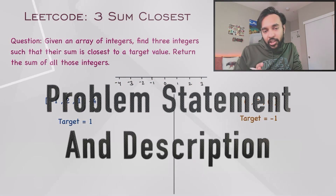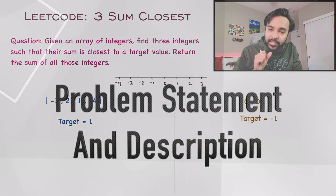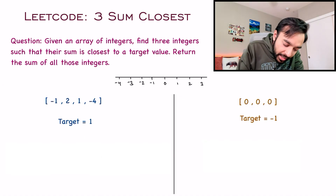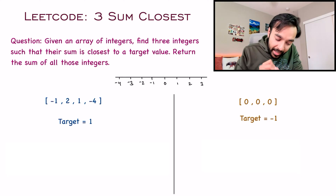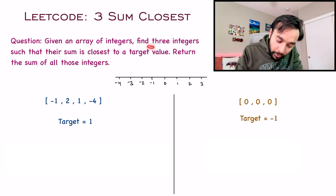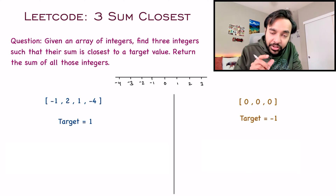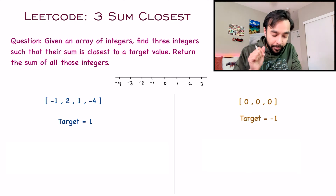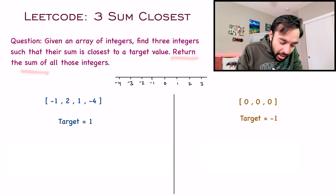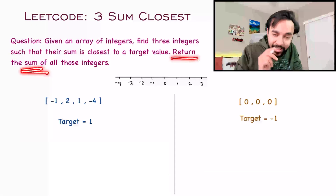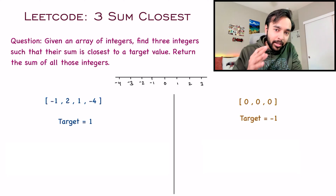Let's make sure that we are understanding the problem statement correctly. In this problem, you are given an array of integers and then you have to find three integers such that their sum is closest to a target value. And once you find these integers, you need to return their sum. So let us understand it better with an example test case.